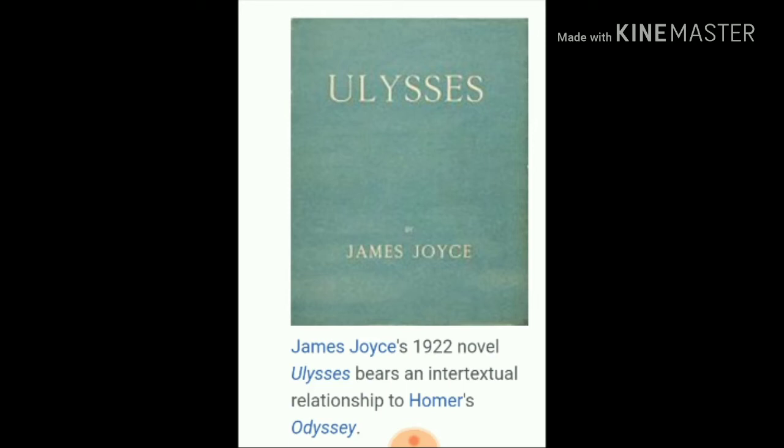Here is one clear example you can picture in your mind. James Joyce's 1922 novel 'Ulysses' bears an intertextual relationship to Homer's 'Odyssey.' So Homer's 'Odyssey' and Joyce's 'Ulysses,' published in 1922 — that is an intertextual relationship.